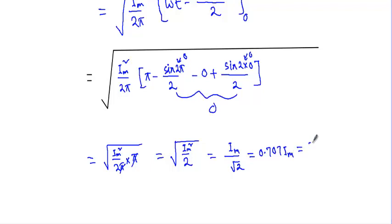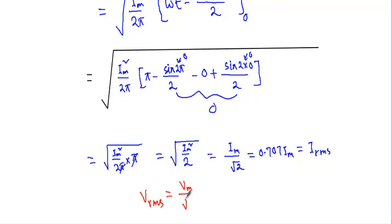So the RMS value of a pure sine wave is Im/√2 or 0.707·Im. Similarly, we can calculate the RMS value of an alternating voltage sine wave: VRMS equals Vm/√2, or 0.707·Vm, where Vm is the maximum value of that sine wave. That's it, thank you.